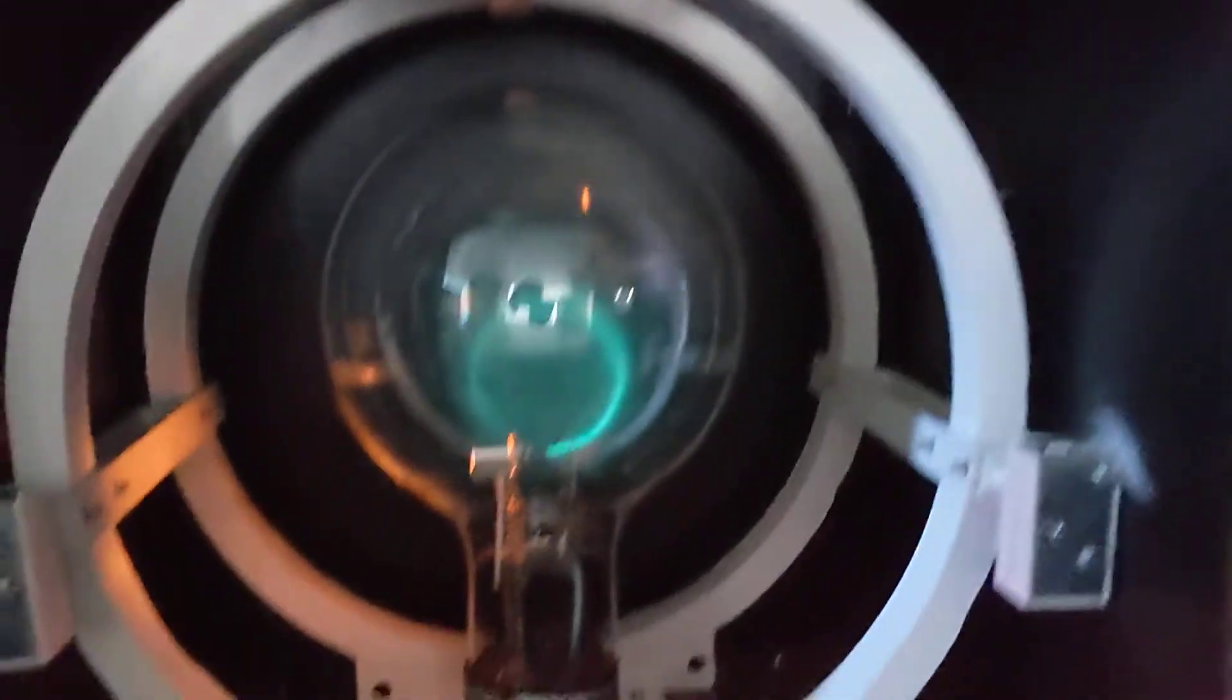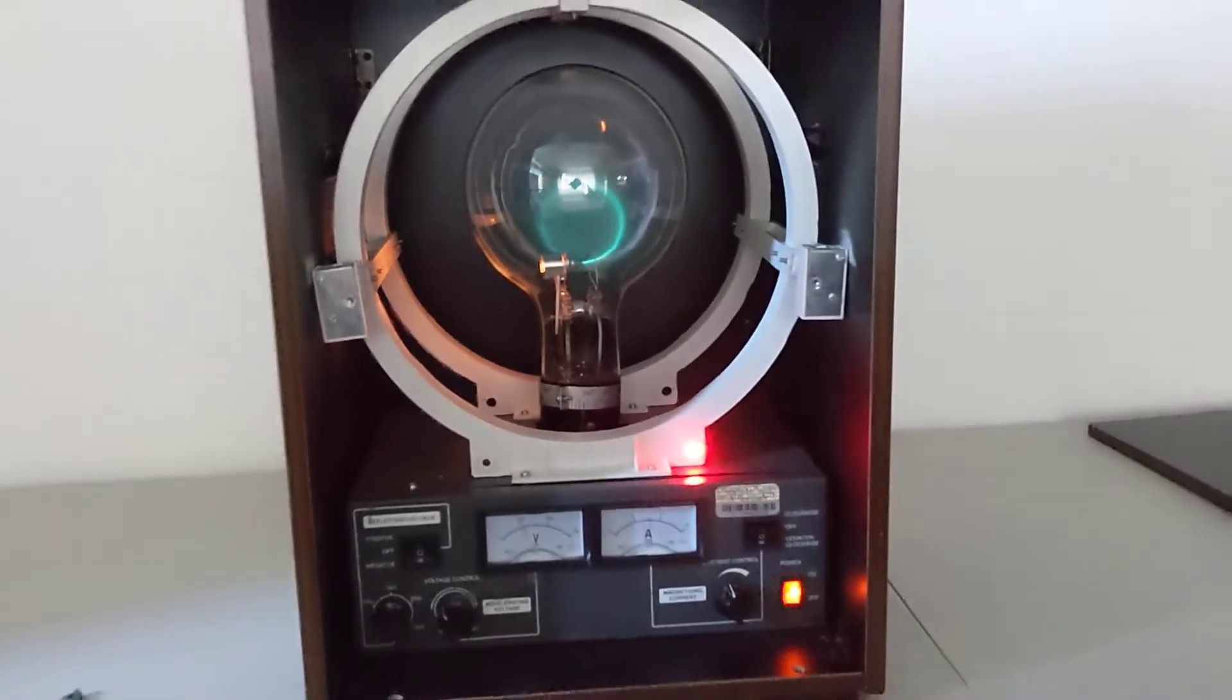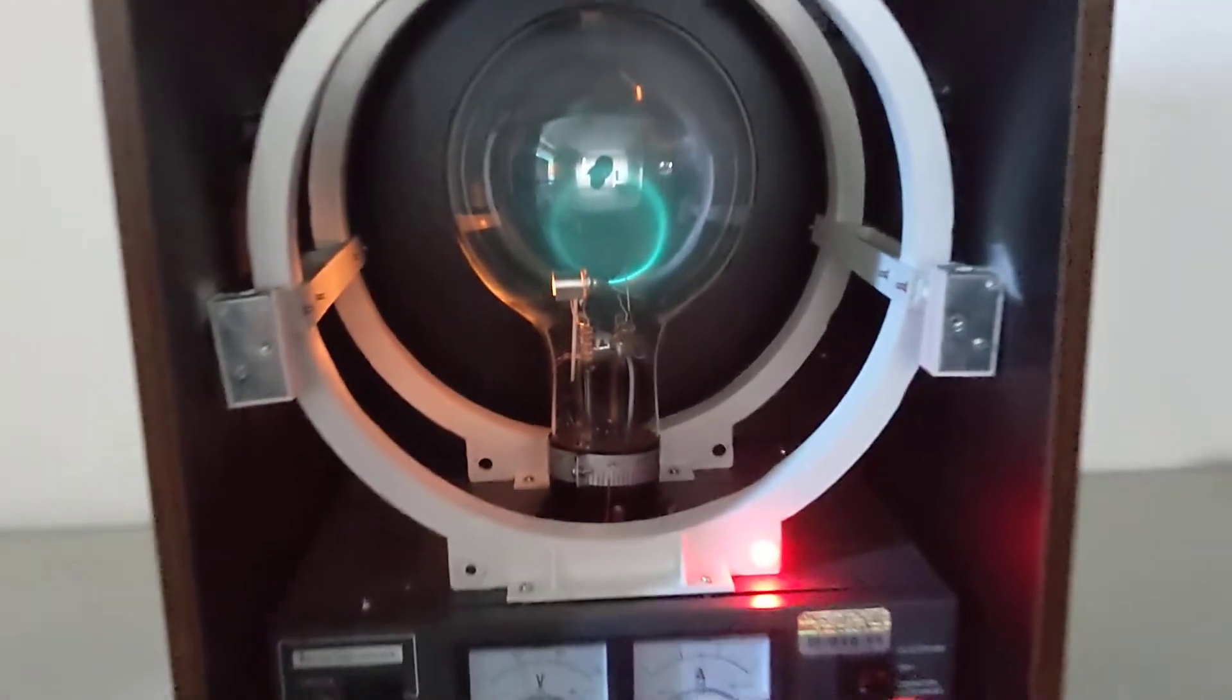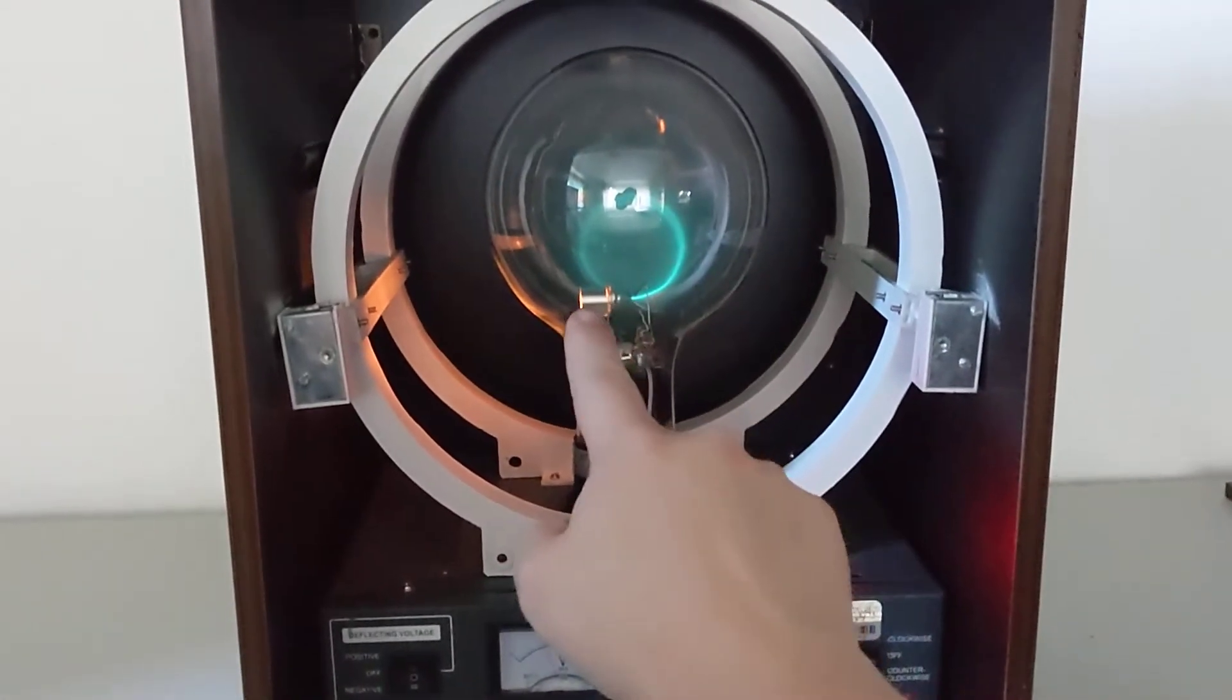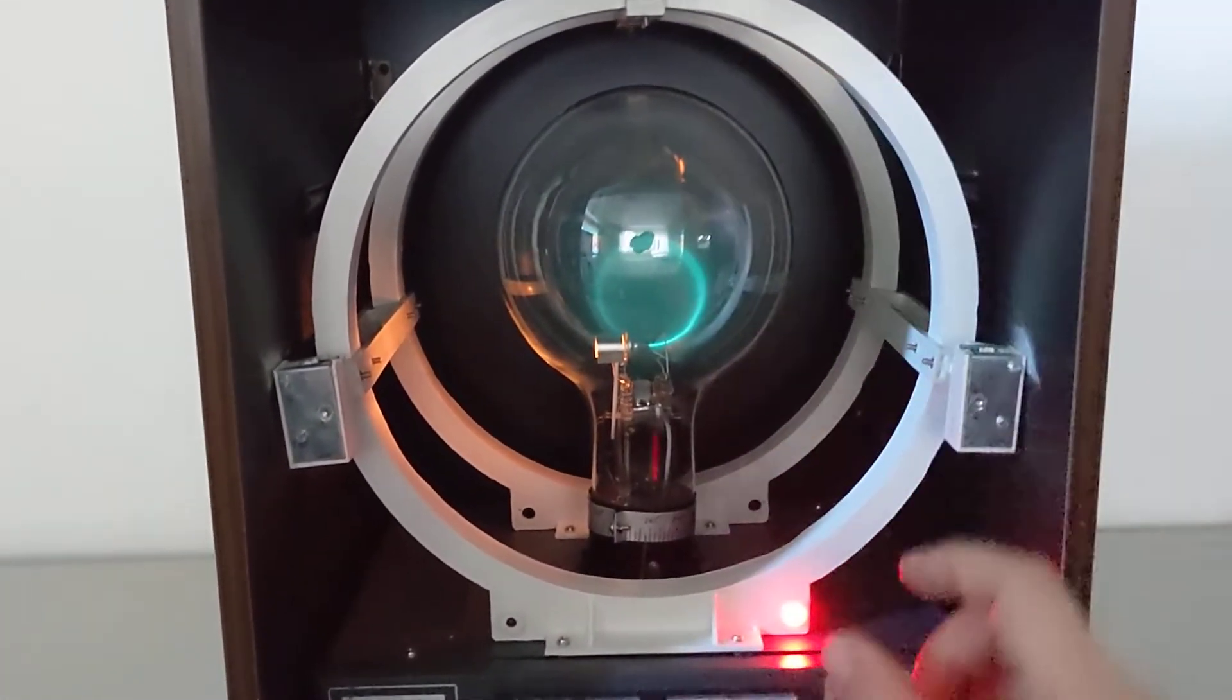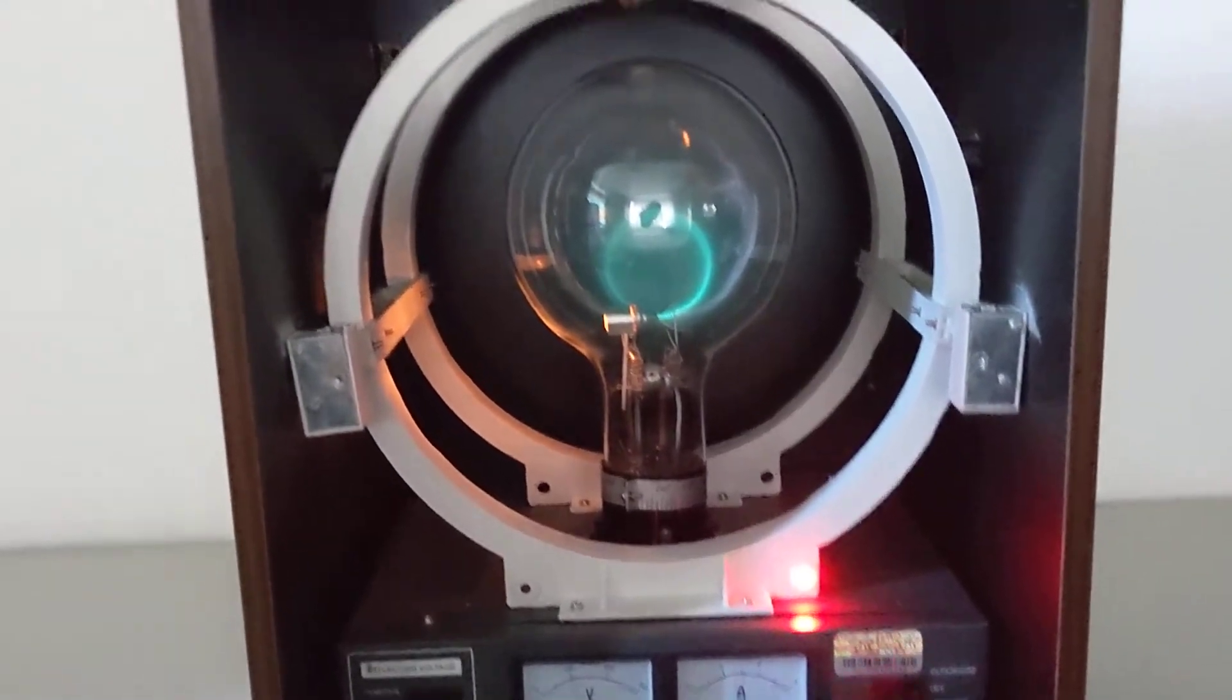So I just got the coolest little demonstration unit from Psi Supply. It's a charge mass experiment where there's an electron gun here that shoots electrons this way and then there's Helmholtz coils that create a magnetic field.